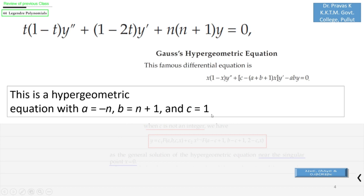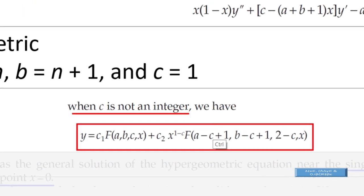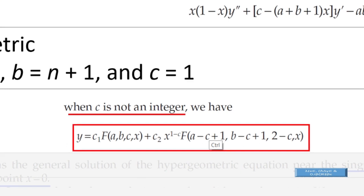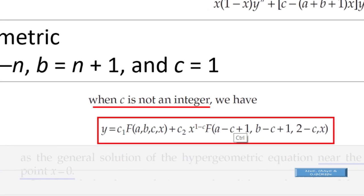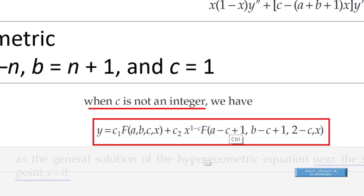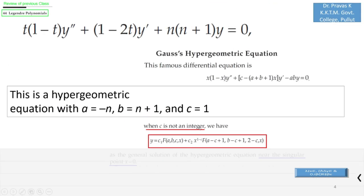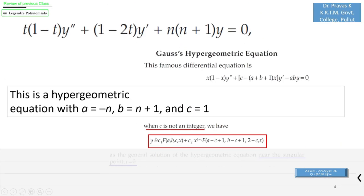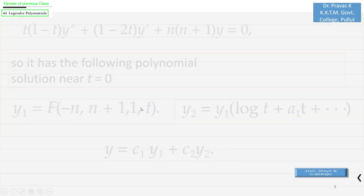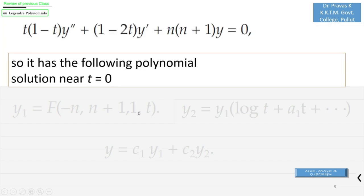But we can see that here the values of a, b, and c are like this, and here c is an integer. But we know that when c is not an integer, then we can find the general solution of Gauss hypergeometric equation in this form near the singular point x = 0. But since c = 1, we can only ensure the first part of this solution.